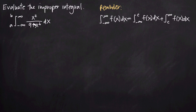When we have that particular type, we're always going to use this formula to evaluate the improper integral. What this formula tells us is that instead of evaluating over the interval negative infinity to positive infinity, we're going to separate this integral into two different integrals, splitting the interval into negative infinity to some constant c, and then some constant c to positive infinity.